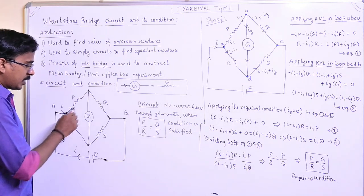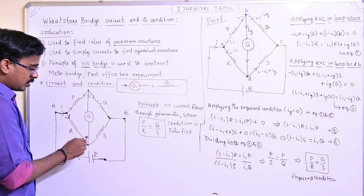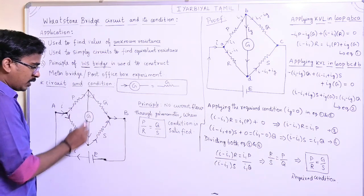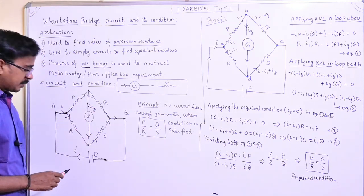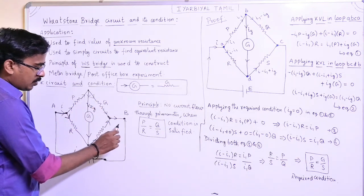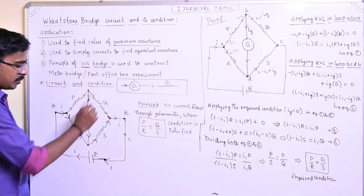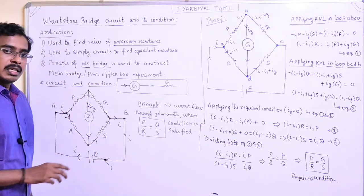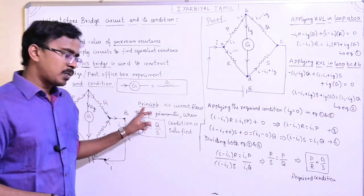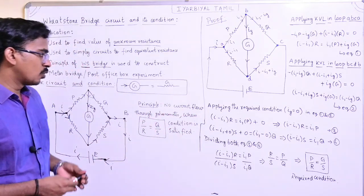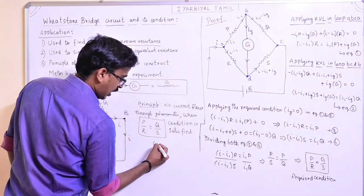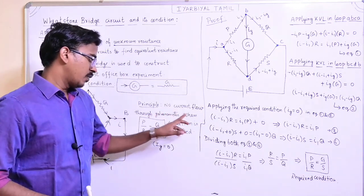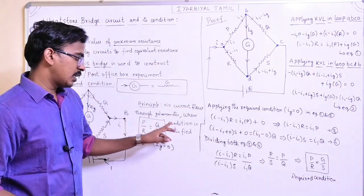The current splits. The current through the galvanometer is Ig. The principle of the Wheatstone Bridge is that no current flows through the galvanometer — that is, Ig equals 0 — when the condition P by R is equal to Q by S is satisfied.